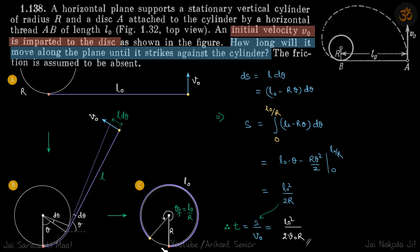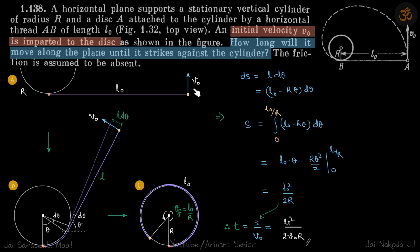While it's moving, one thing we know is that this line is always forming a tangent, which means the tension on this particle is always directed perpendicular to its velocity. In other words, the speed will not change — so during the whole motion, v0 will remain constant.